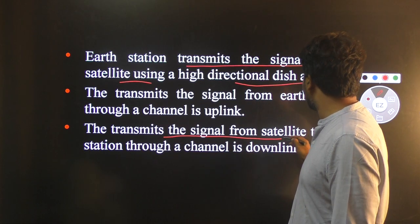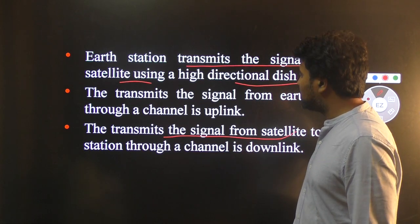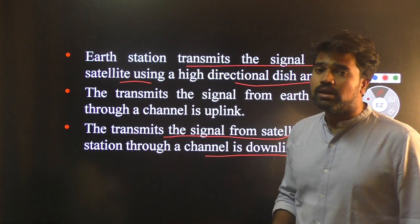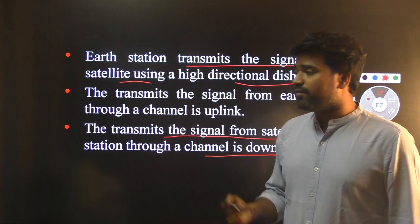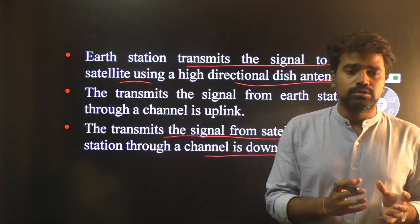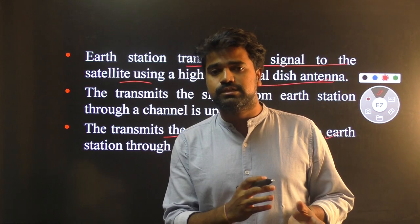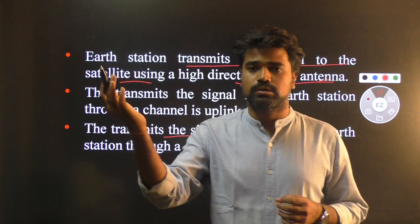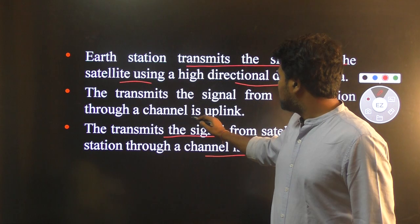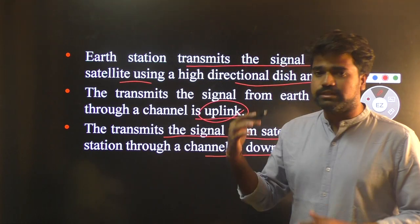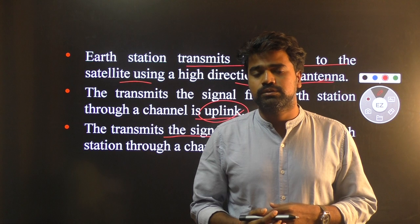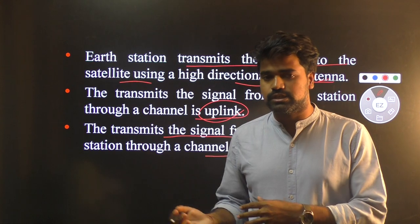The satellite then transmits the signal back to the ground station through a channel called the downlink. From the base station to the satellite you use the uplink channel, and from the satellite back to the ground or destination you use the downlink channel.